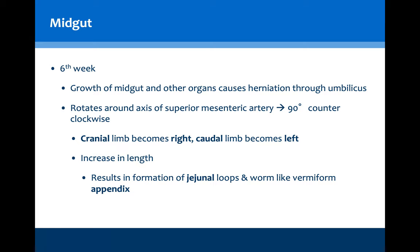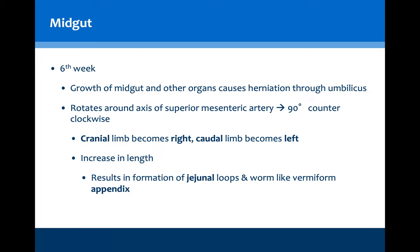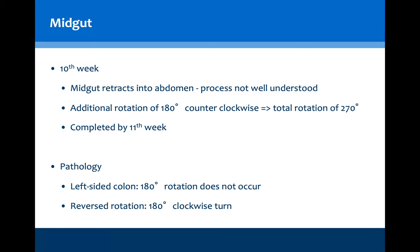This midgut is growing at a faster pace than the surrounding abdominal cavity and as such herniates through its connection to the umbilicus. It then rotates around an axis of the superior mesenteric artery that runs through the fold of this primary intestinal loop, doing so 90 degrees in a counterclockwise manner such that the cranial limb now sits on the right and the caudal limb sits on the left. After formation of jejunal loops and the worm-like appendix, as the midgut begins to retract into the abdomen, an additional 180-degree counterclockwise rotation occurs, leading to a total rotation of 270 degrees counterclockwise.